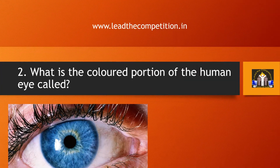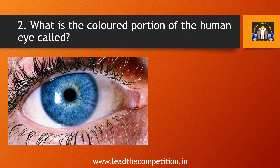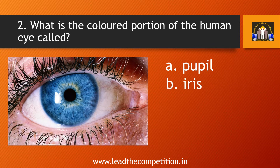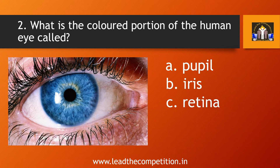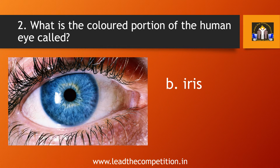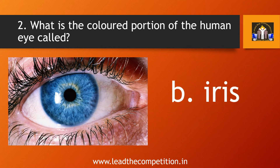What is the colored portion of the human eye called? A. Pupil, B. Iris, C. Retina, or D. Cornea. The answer is B. Iris.